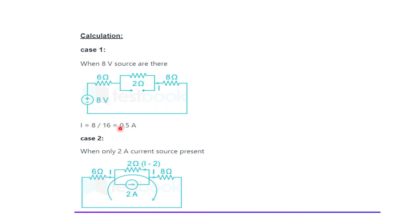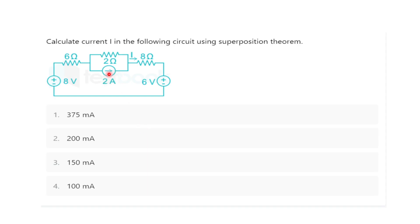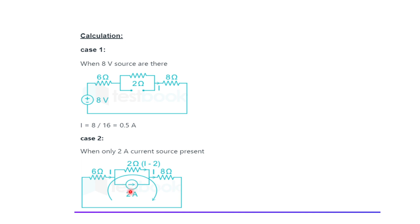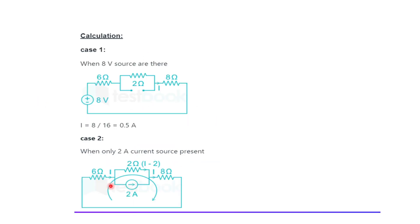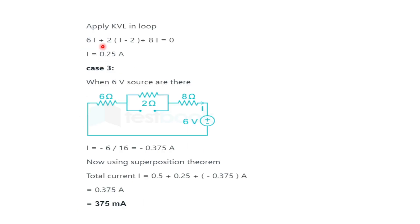In Case 2, considering the 2A current source alone: both voltage sources are short circuited. If the current through the branch is I and the total supply is 2A, the current through the other branch is I−2. Applying KVL in the loop: 6I + 2(I−2) + 8I = 0, giving I₂ = 0.25 A.